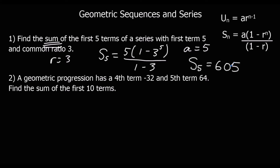A geometric progression has the 4th term equal to -32 and the 5th term equal to 64. Find the sum of the first 10 terms. This time we don't have the information to put straight into the sum formula — we don't know what a is and we don't know what r is, so we're going to have to find them first. We're going to use the nth term formula to find a and r, and then use the sum formula to find the sum of the first 10 terms.